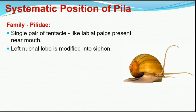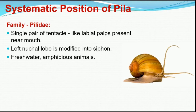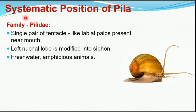The left mantle lobe is modified into a siphon, which functions like a sieving structure — removing unwanted things from the aquatic environment so that only food particles are taken into the body. These are freshwater amphibious animals; you will mostly find them in freshwater, though they can also occur in brackish water where there is slight salinity. These are the reasons for their inclusion in Family Pileidae.